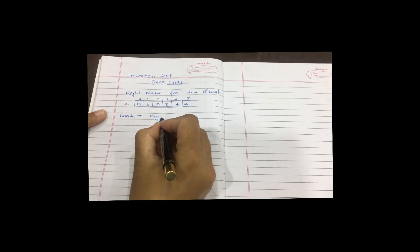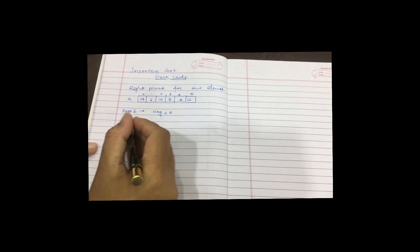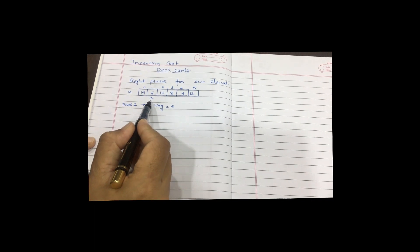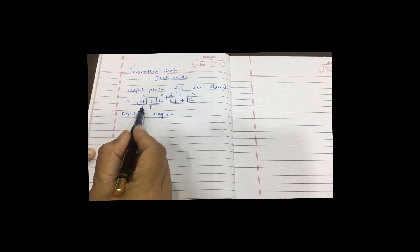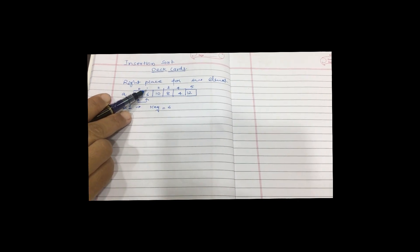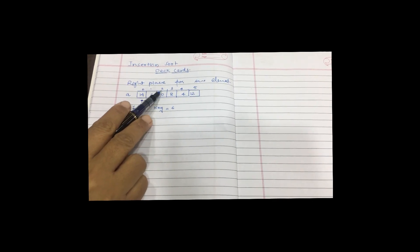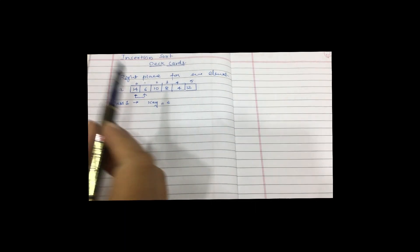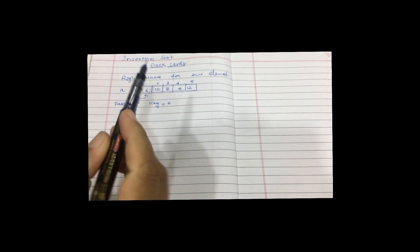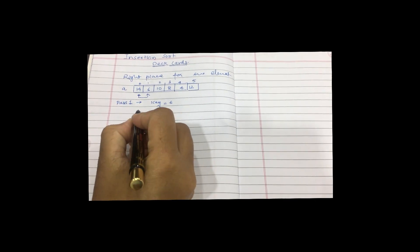Insertion sort, in every pass, takes one key element. For the first pass, the key element will be 6. The key element always starts with index 1. The key element at index 1 is compared with elements at lower indices. When the key is at index 2, it is compared with index 1 and index 0. This is how insertion sort finds the right place for each element.